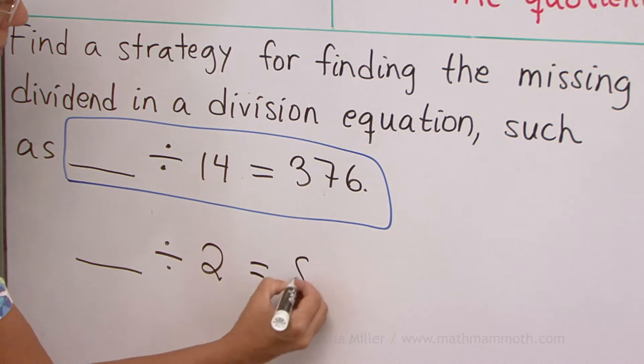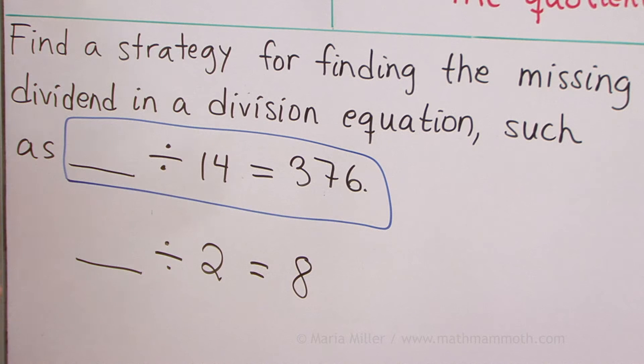Such as, let's put 2 there and 8. Can you see what number goes in here? 16, right? 16 divided by 2 equals 8. So, how could we find this 16 from 2 and 8?